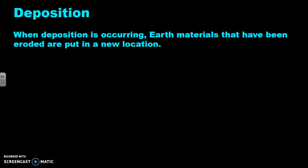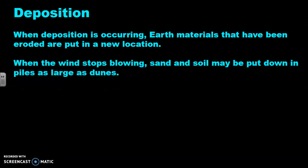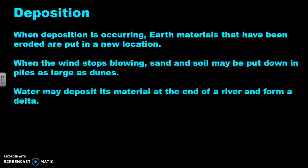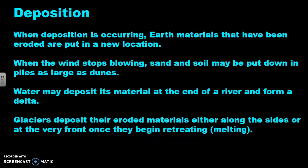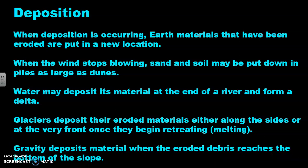Deposition. When deposition is occurring, Earth's materials that have been eroded are put in a new location. When the wind stops blowing, sand and soil may be put down in piles as large as a dune. Water may deposit its material at the end of a river and form a delta. Glaciers deposit their eroded materials either along the sides or at the very front once they begin retreating or melting. Gravity deposits material when the eroded debris reaches the bottom of the slope.